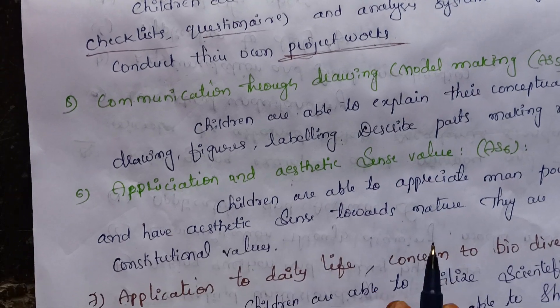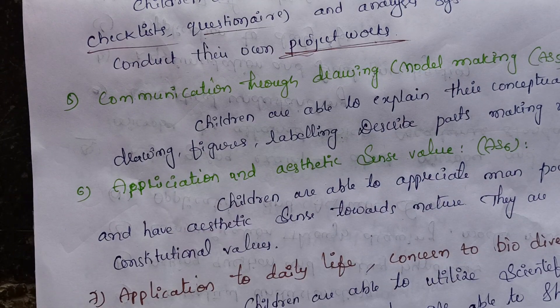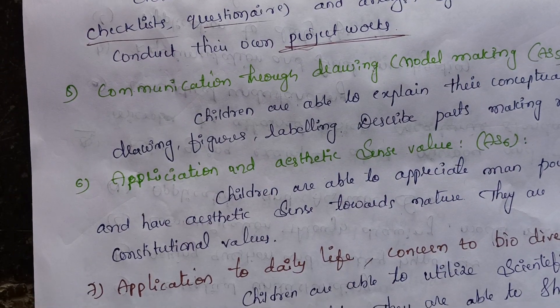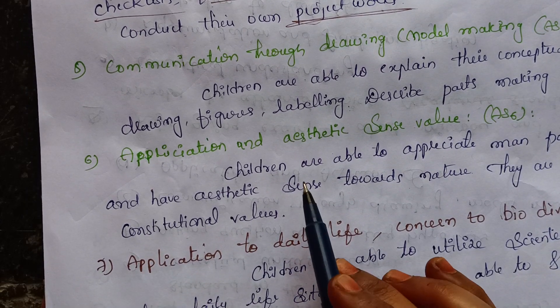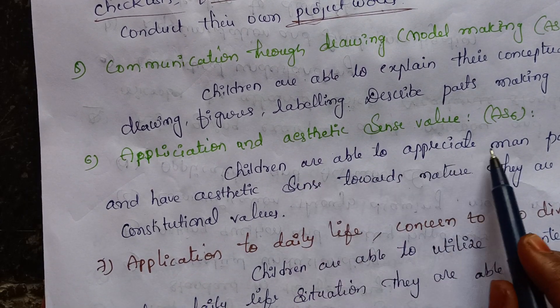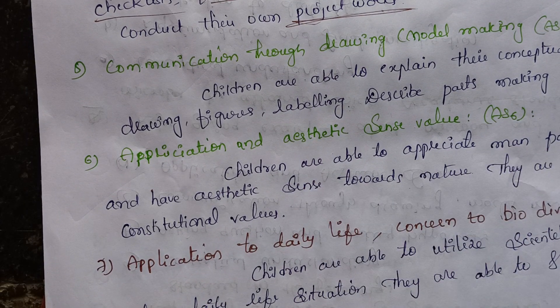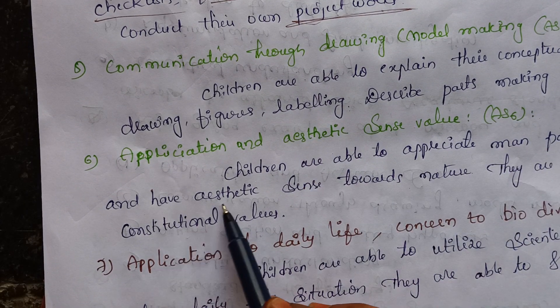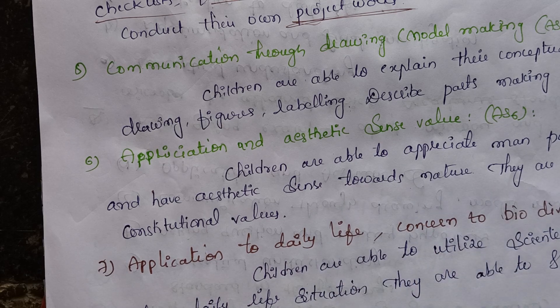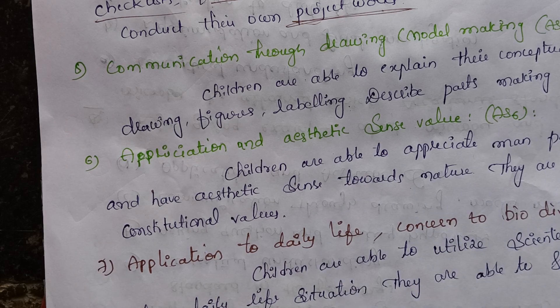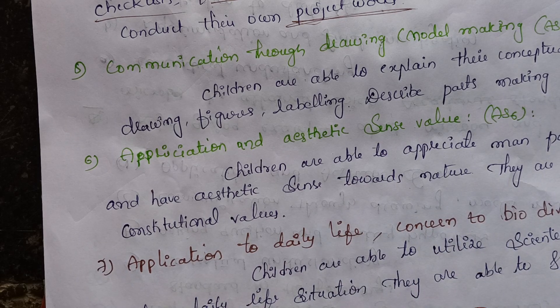The next academic standard is appreciation and aesthetic sense value. Children are able to appreciate manpower and nature and have aesthetic sense towards nature. They are also able to follow constitutional values.